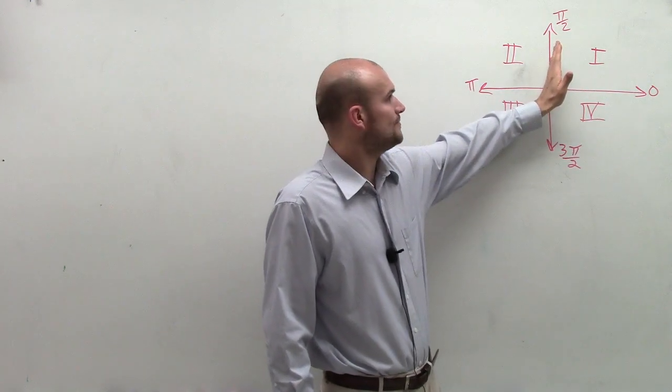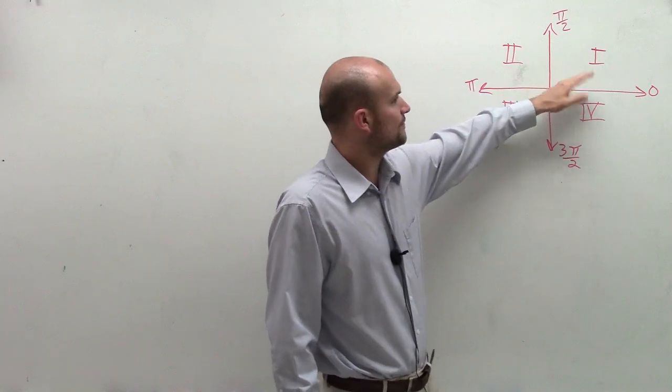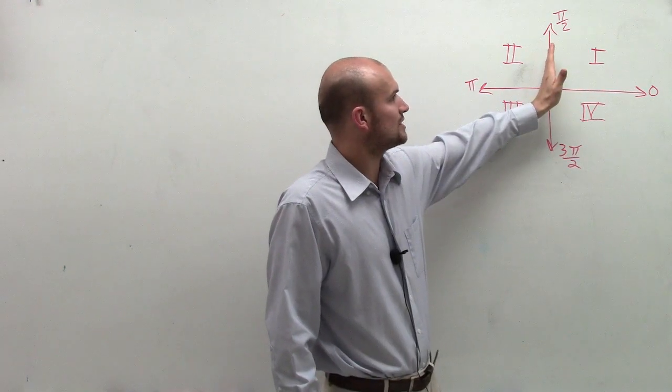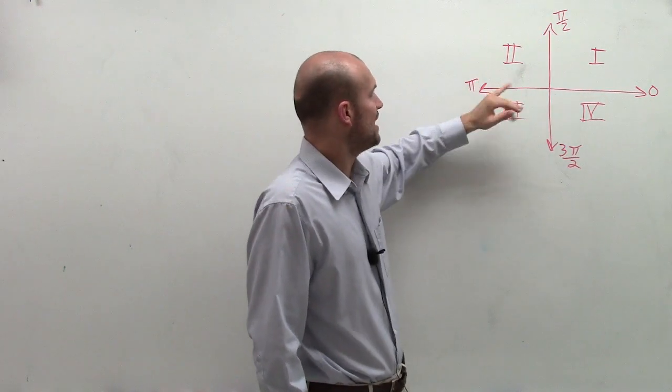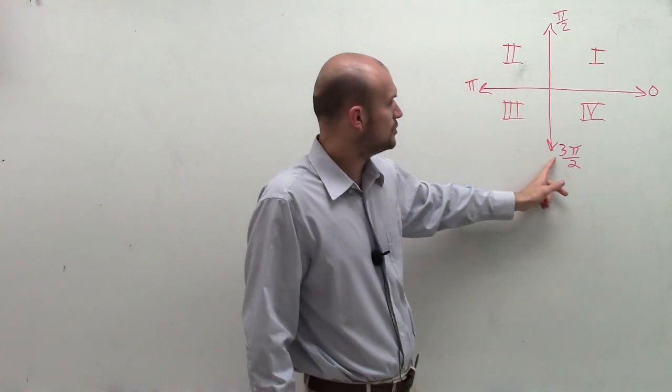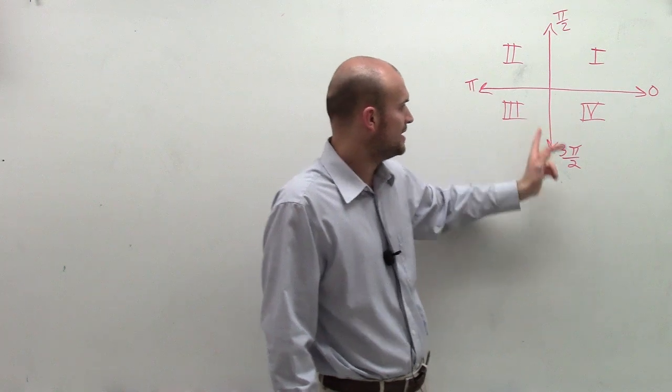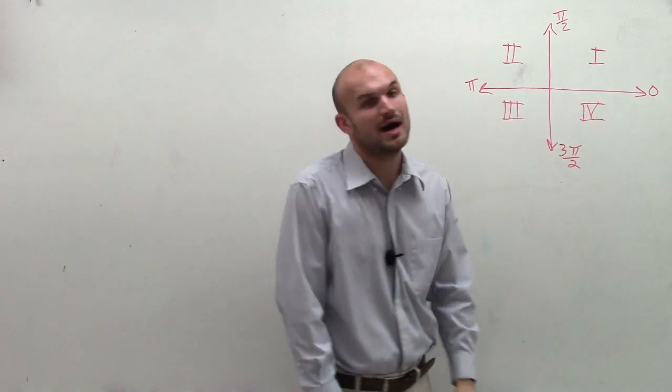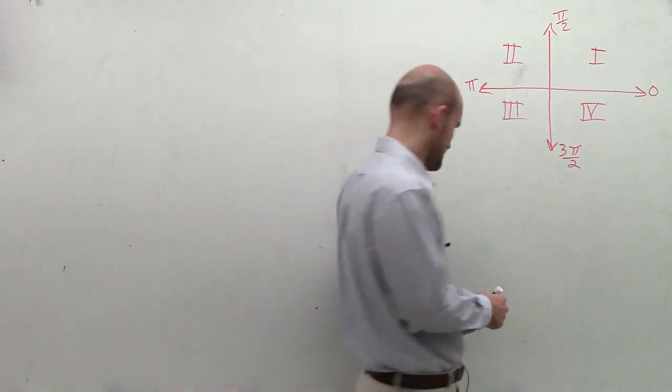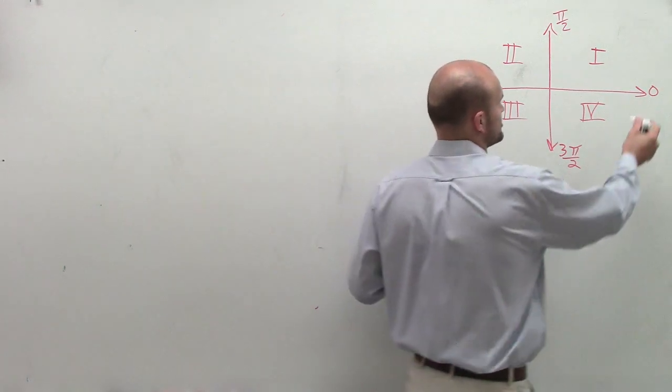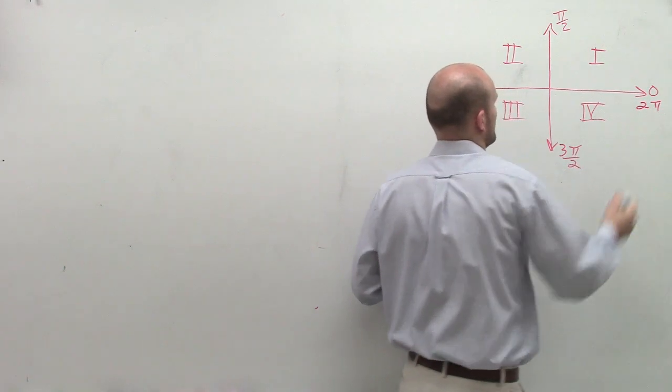So from 0 to π over 2 is going to be quadrant two. From π over 2 to π is going to be quadrant two. From π to 3π over 2 is going to be quadrant three. And from 3π over 2 to π or back to 2π is going to be quadrant four.